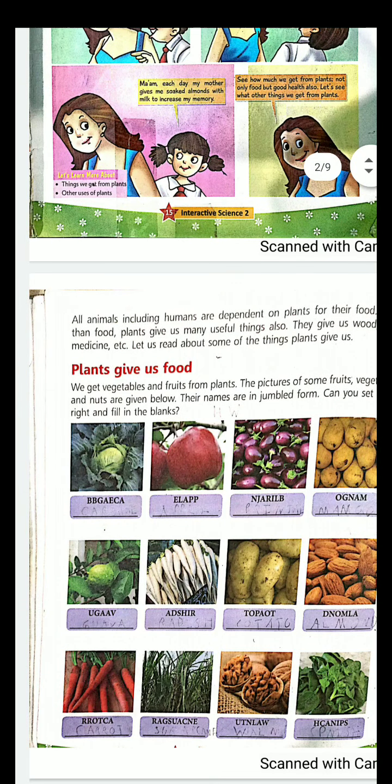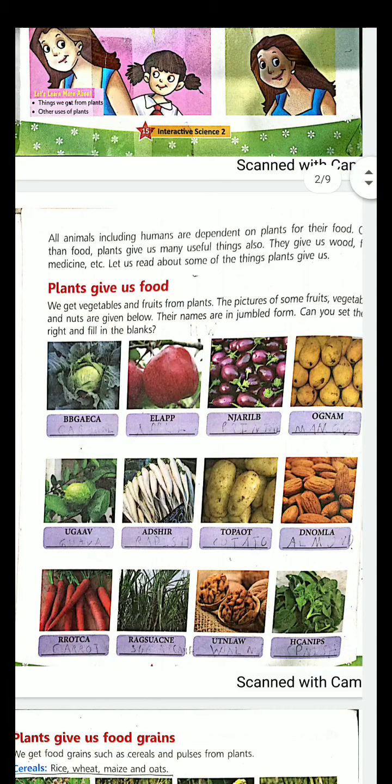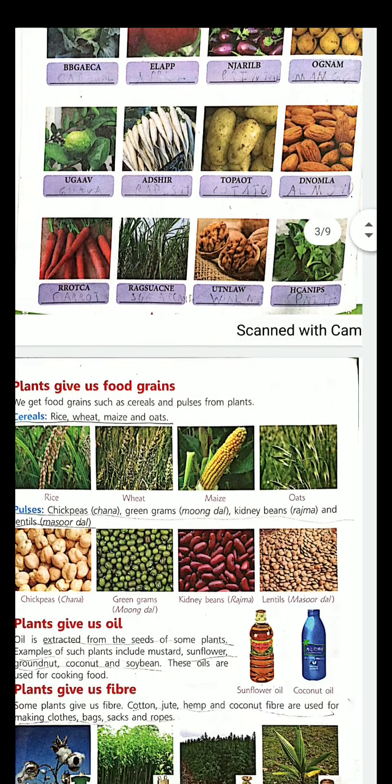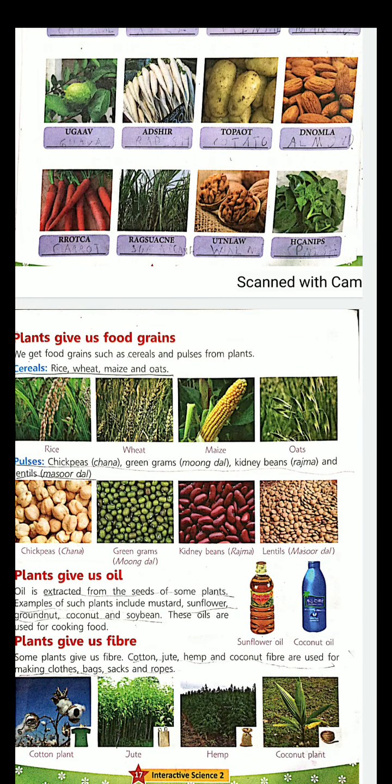They give us grain, fruits, vegetables, nuts. They give us grains - that is cereals and pulses, rice, wheat, maize, chickpea, moong dal, kidney beans.